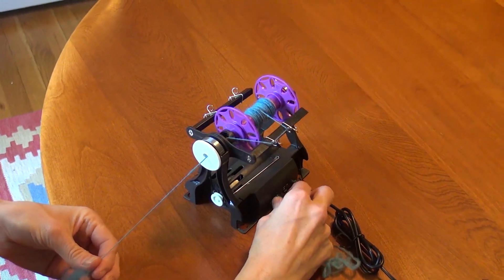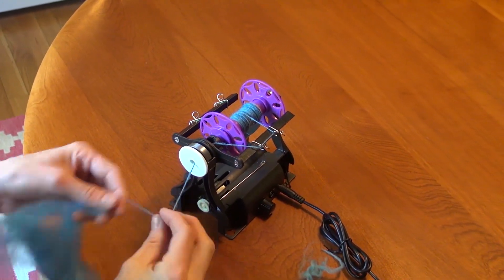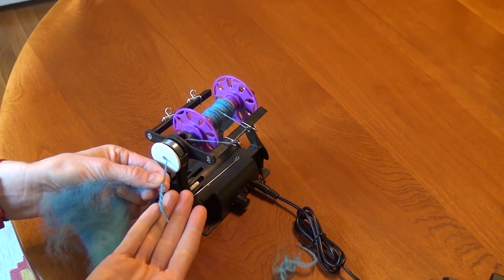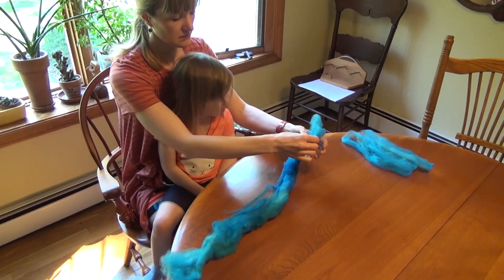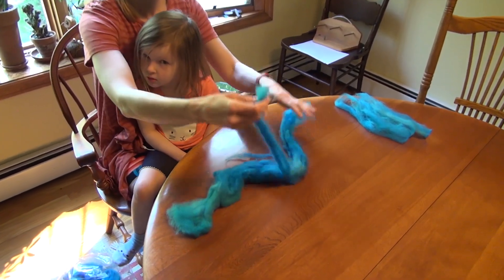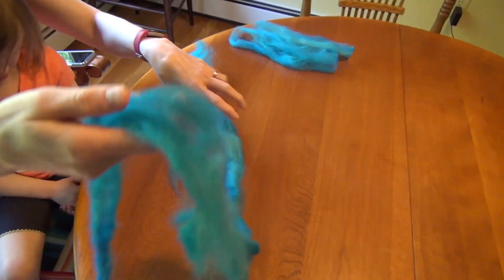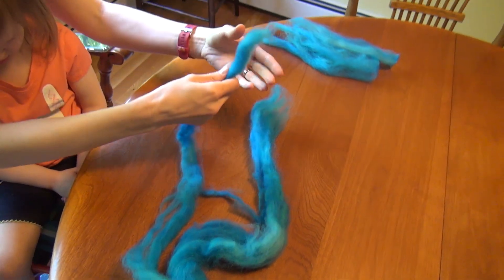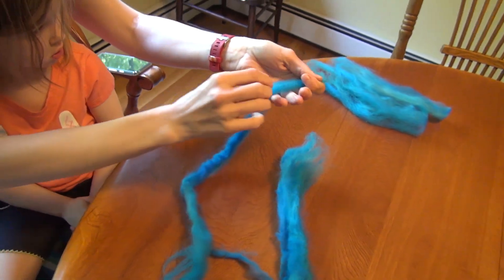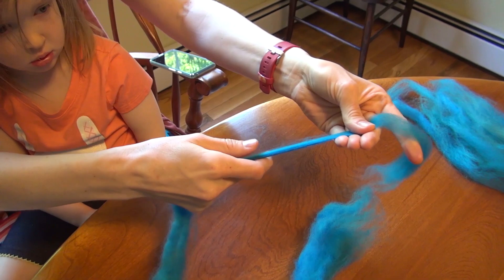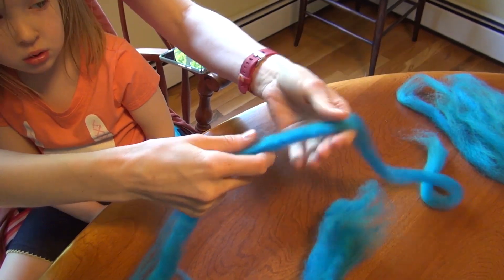Here is an example of properly spun yarn. One technique some people think helps when you are learning to spin is pre-drafting. This is where you take your fiber and spread it out before spinning so that it is easier to draft while spinning. You can spread it out into long thin pieces or you can just fluff it out a little bit.